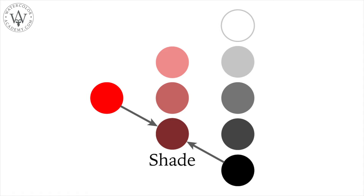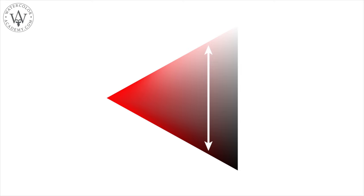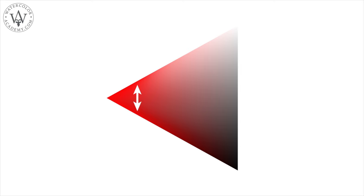As we gradually reduce the light-dark contrast, the saturation increases and the red color becomes purer. However, the range of tonal values becomes smaller and smaller. That is why there is no such thing as a highly saturated light or dark red color.